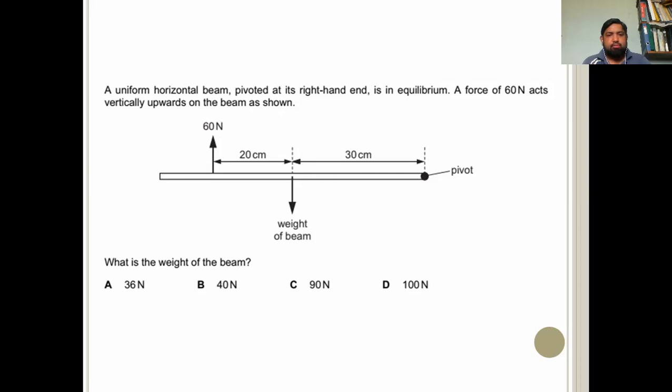So a force of 60 Newton acts vertically upwards on the beam as shown. Here we can identify a pivot and we have a force acting upwards and the weight of the beam acting downwards. So this 60 Newton force is applying a moment that will be in clockwise direction and weight will be applying a moment in anticlockwise direction. So if our object is in equilibrium, both will be equal. So 60 into 50 centimeter and weight into 30 centimeter. So you can equate that. 60 into 50. So that will be almost 100 Newton.